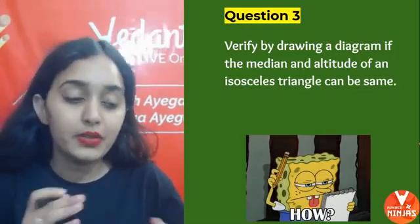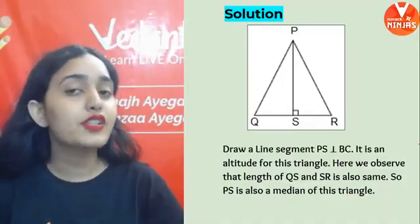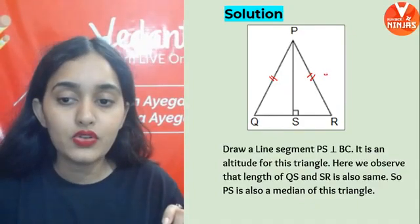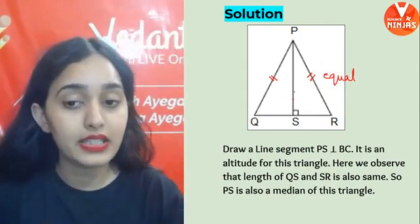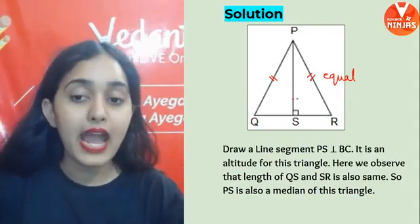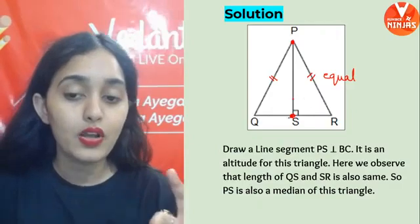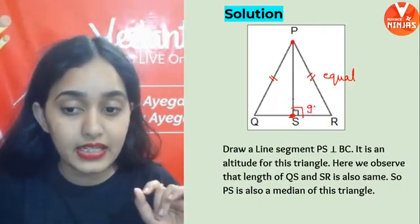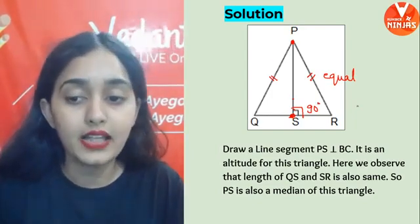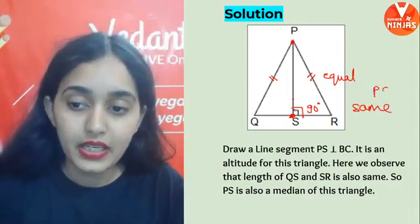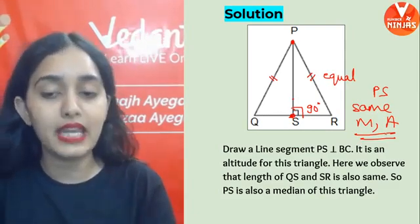Verify by drawing a diagram if the median and altitude of an isosceles triangle can be the same. An isosceles triangle has two equal sides. When you draw the altitude from the vertex angle to the base, you notice that it makes a 90 degree angle with the opposite side and also hits the midpoint. So the median and the altitude of an isosceles triangle are the same segment — PS is both the median and the altitude. This is a property of the isosceles triangle.